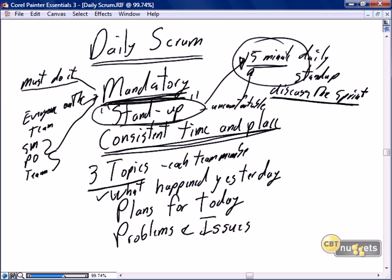What did they do yesterday? For example, 'I worked on story number 15 and I was able to complete the development.' What are you going to do today? 'I'm planning to do the testing on user story 15 for the first three hours, then I will go to the storyboard and pick the next story scheduled for completion in this sprint.' And we want each team member to tell us any problems and issues. That's it — status and facts.